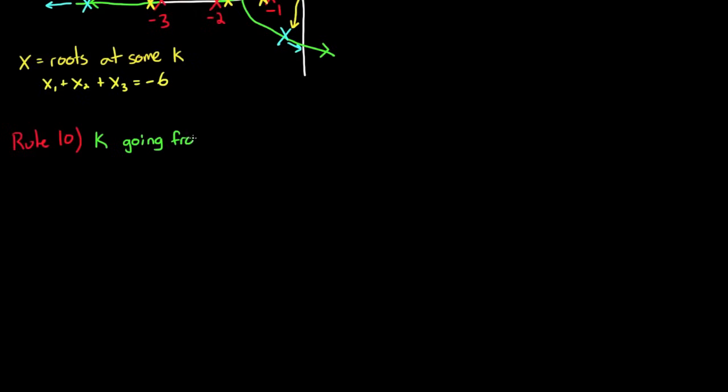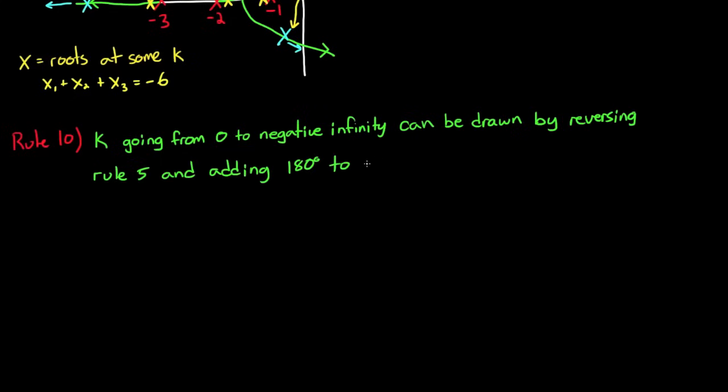In rule 10 you can kind of take or leave. For all of these root locus we've been seeing how the roots move when you increase k from 0 to positive infinity. And rule 10 is just a way of thinking of it if you want to decrease it from 0 to negative infinity. And you can do that by reversing rule 5 and basically saying that the locus appears on the real axis to the right of all of the odd critical frequencies, and by adding 180 degrees to the asymptote angles.